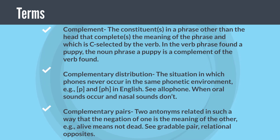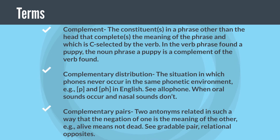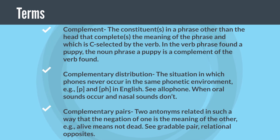Complementary distribution: the situation in which phones never occur in the same phonetic environment. Example: /p/ and /ph/ in English. See also: Allophone — when oral sounds occur and nasal sounds don't.